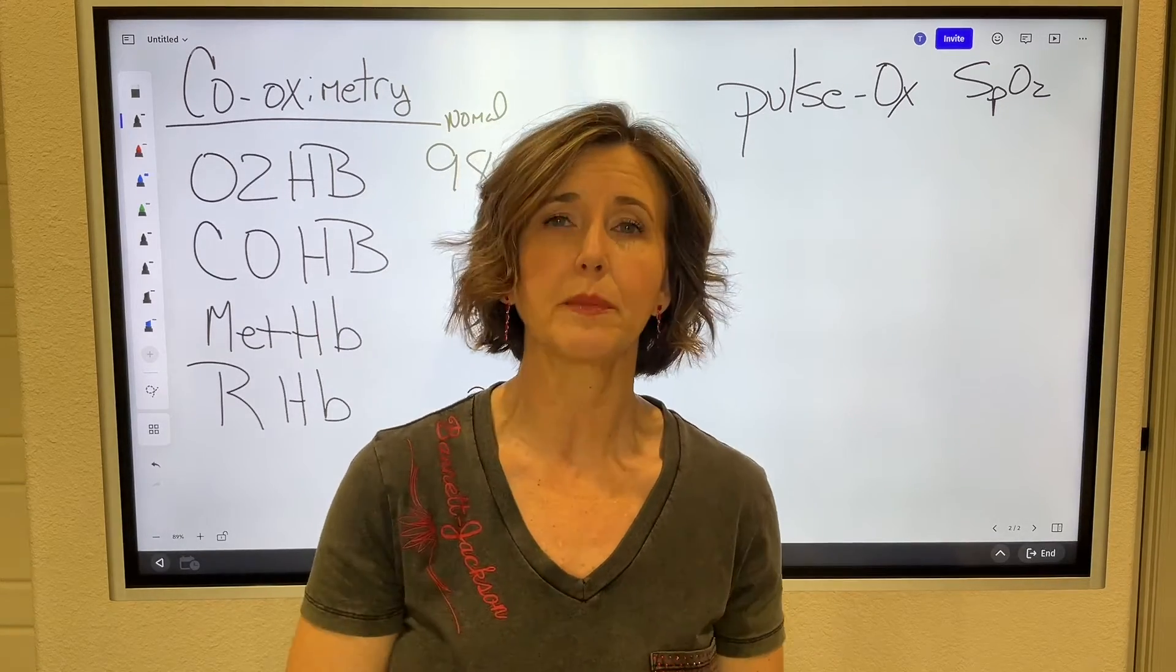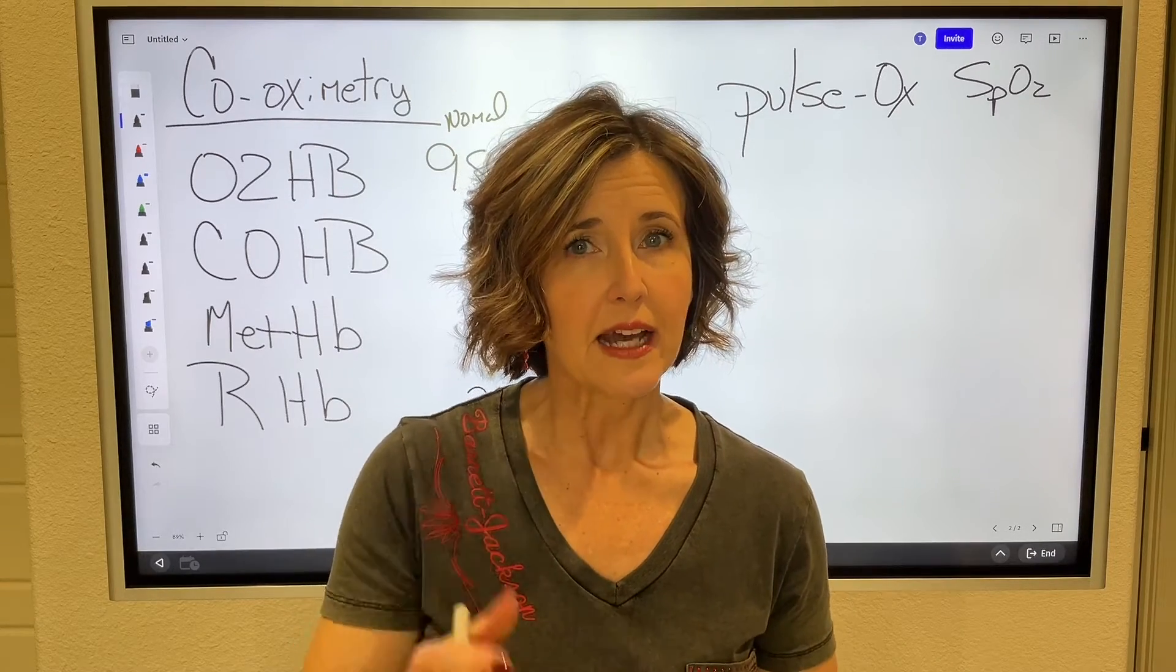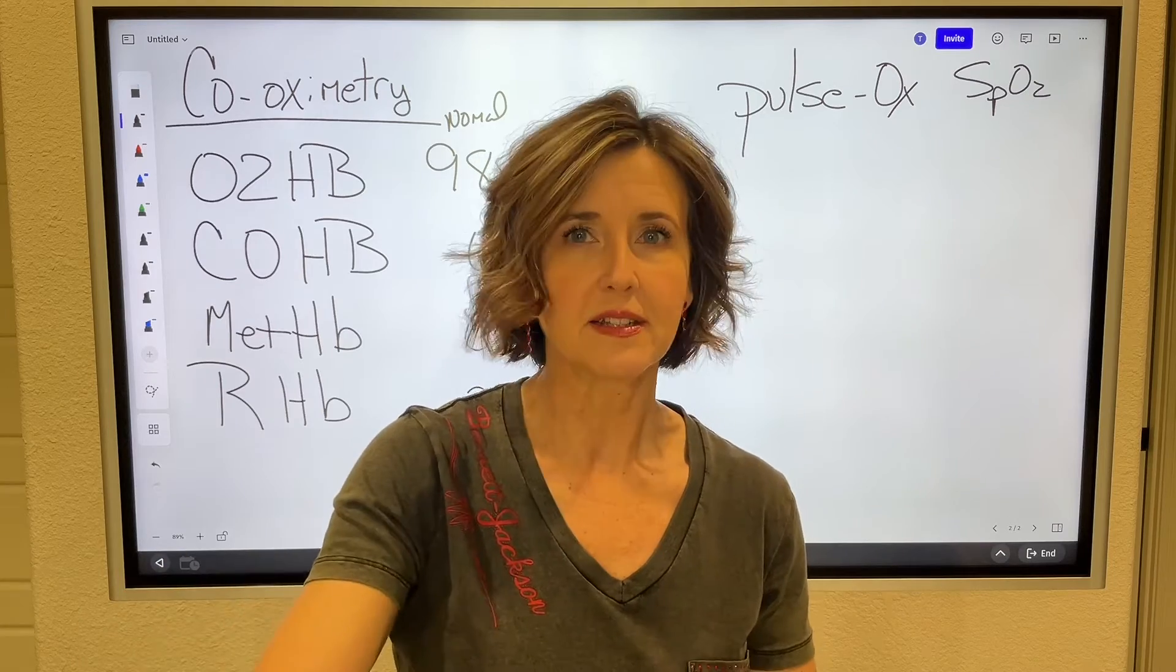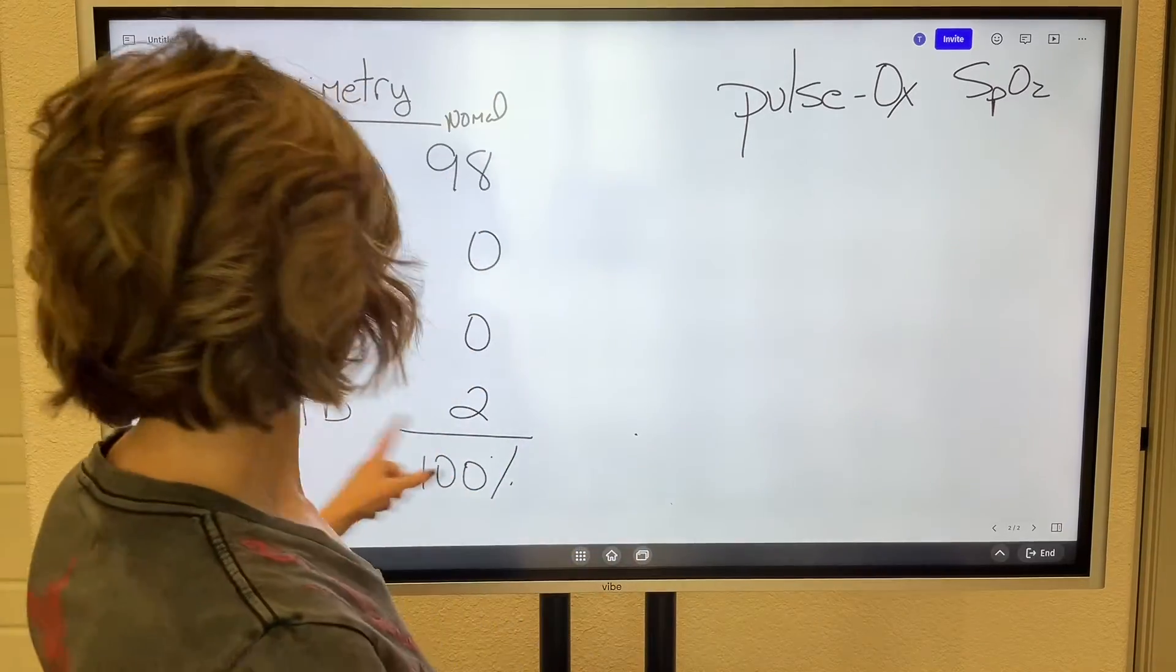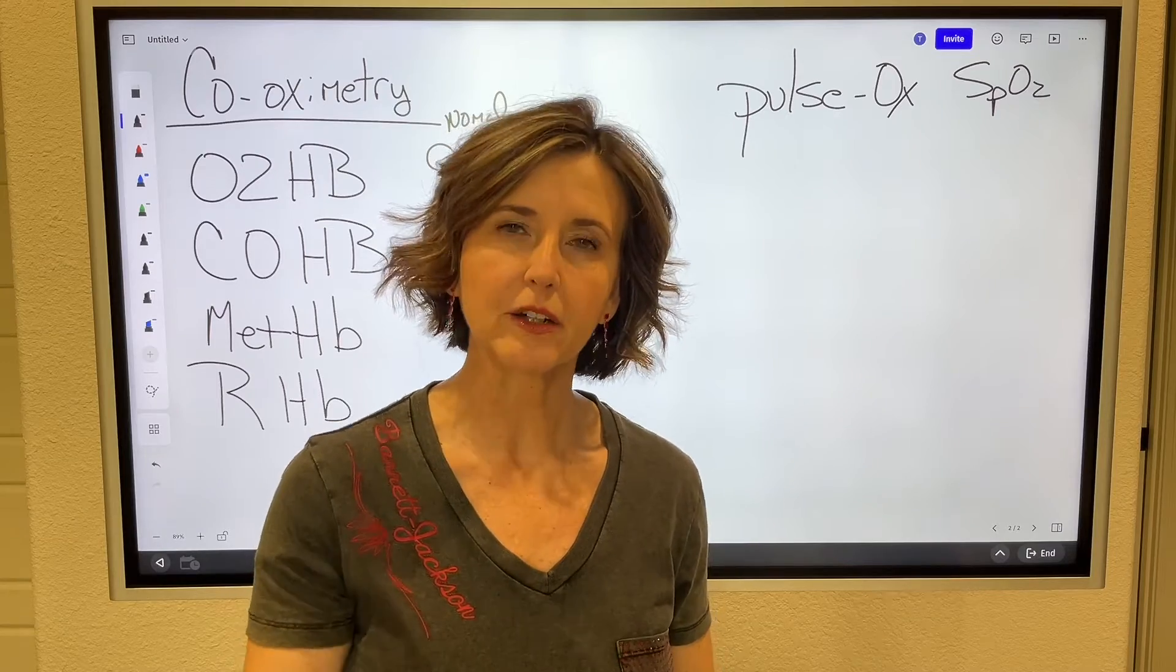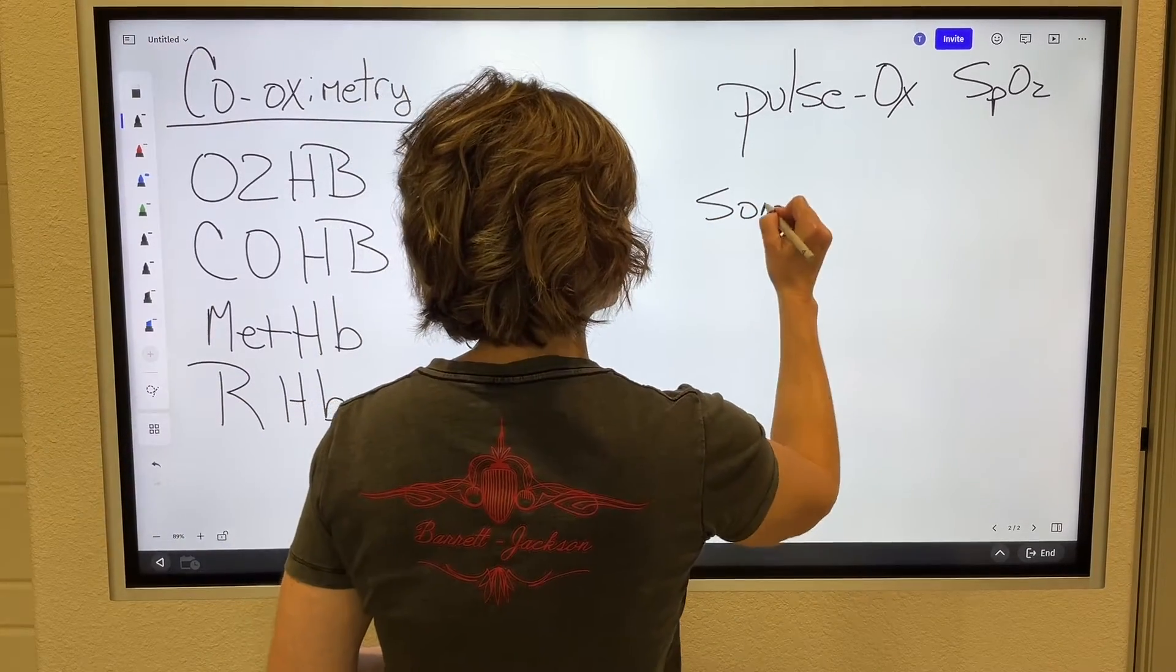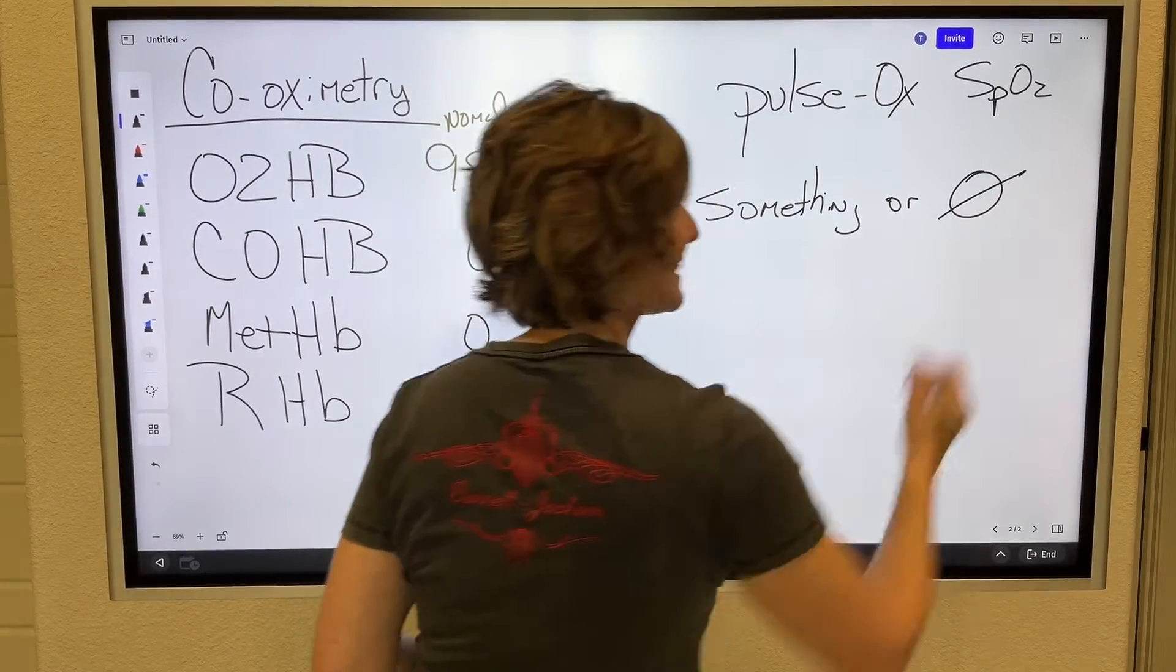All that number, when you put a pulse ox on somebody and it reads 96%, what that means is 96% of that hemoglobin is attached, something is attached to that hemoglobin. 96% something is attached. 4% nothing is attached. Say that differently. 4% would be reduced hemoglobin. 96% would be something else. We assume that something else is oxygen. So it's really something is attached or nothing is attached.